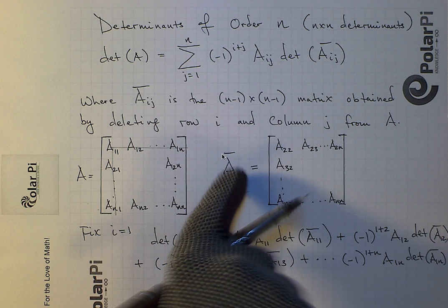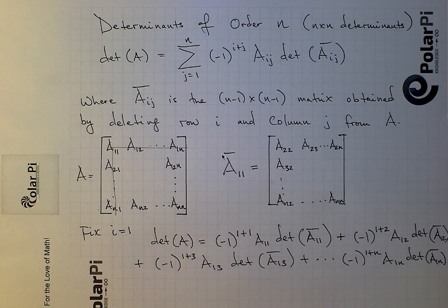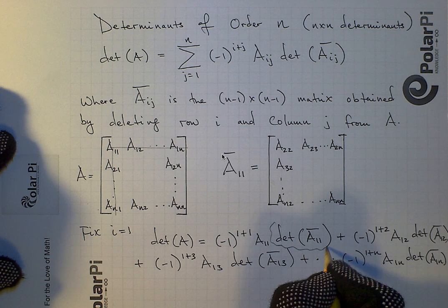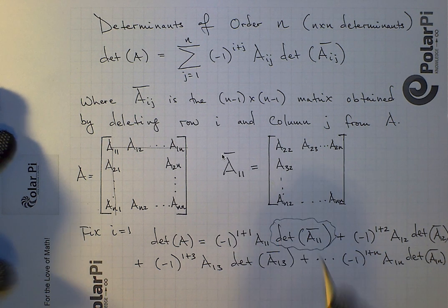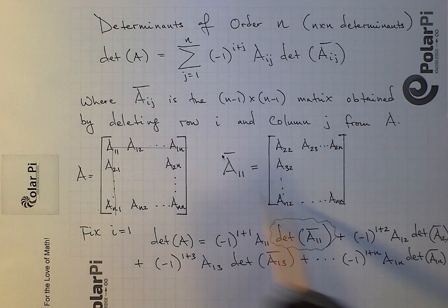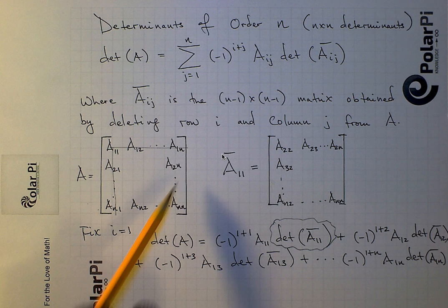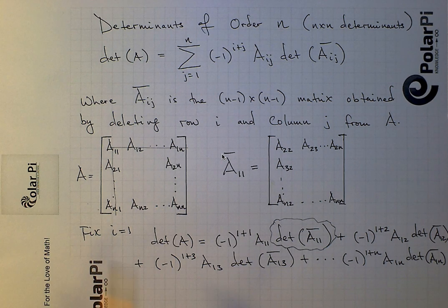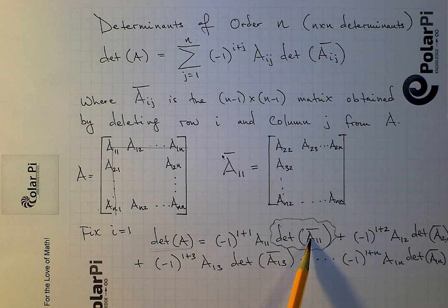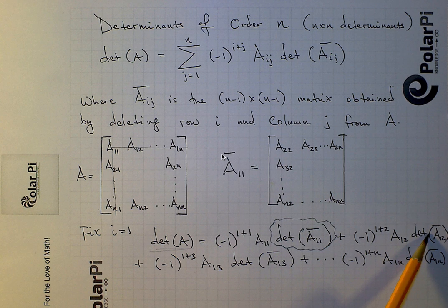Now, this is just A11 bar. Notice that what you've got right here is the determinant of A11 bar, meaning that you'd have to find the determinant of this matrix, which has one less column and one less row than the matrix's determinant you are trying to find. So, in order to find the determinant of this n by n matrix, you have to find the determinant of this n minus 1 by n minus 1 matrix, and so on. So, when we're working on the determinant of a 3 by 3 matrix, then we would have to, in turn, find the determinant of 3 2 by 2 matrices.